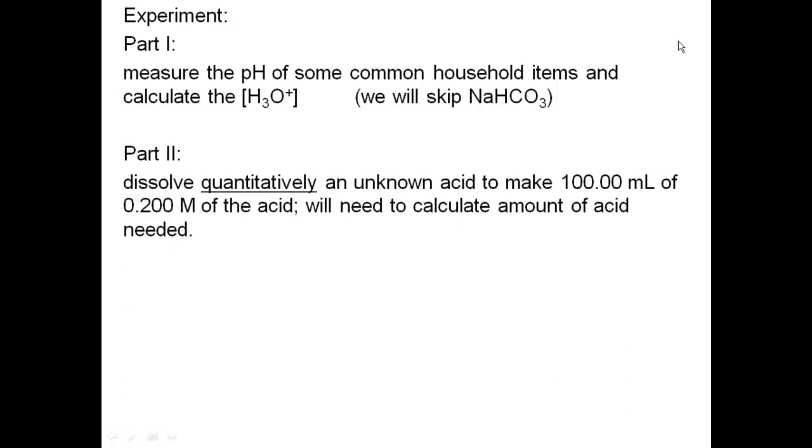Second part of the experiment, we're going to dissolve quantitatively. It means I need all that sample. If I measure, put it on a beaker to get the mass of it on a balance, I need to wash that beaker and put that in my flask as well. I need to get all of that sample over quantitatively of an unknown acid to make 100 mL of 0.2 molarity of an acid. You're going to need to calculate the amount of acid needed. The molar mass is on the bottom of your unknown that's going to be assigned by the TA. You're going to have to calculate how much mass you need to make a 0.2 molarity solution. Check with your TA to make sure you did the calculation correctly.